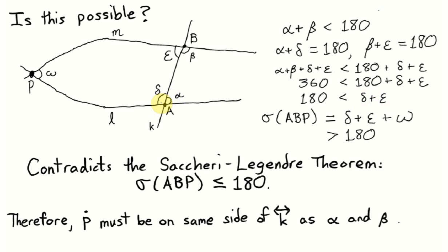Now, consider this triangle that we've formed with the points A and B, where the transversal intersects L and M, and the point where L and M intersect, that point P. Well, the angle sum of that triangle ABP is angle delta plus angle epsilon plus angle omega, as we've marked it here. But delta and epsilon added together are already greater than 180 degrees. And therefore, the angle sum of this triangle is greater than 180. Earlier, we proved the Saccheri-Legendre theorem, which says that in neutral geometry, the angle sum of any triangle must be less than or equal to 180 degrees. This is a contradiction. Therefore, our initial assumption that this point P was on the side opposite from the angles alpha and beta must be false. And therefore, this point of intersection must be on the same side of the line K as the angles alpha and beta.